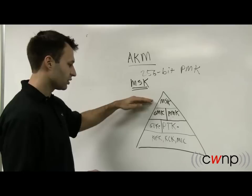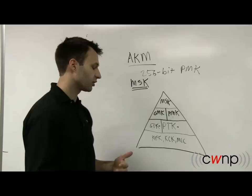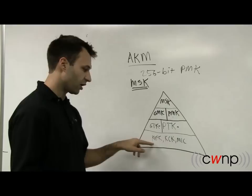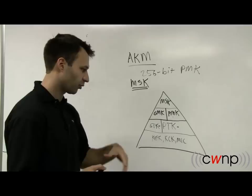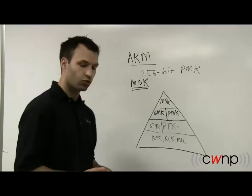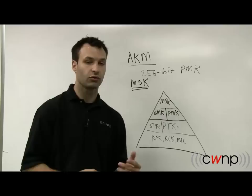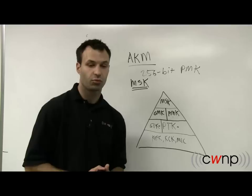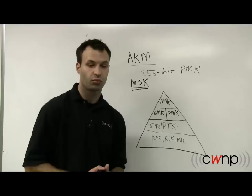In a nutshell, that's authentication and key management. You start with a master session key or a PMK, depending on whether you're using personal or enterprise security. That PMK is turned into a PTK, comprised of other encryption keys, during the four-way handshake. At the same time, the GMK is generated on the access point by a proprietary process and turned into a GTK — group temporal key — usually passed to the client during the four-way handshake or the group key handshake. That's AKM, authentication and key management. My name's Marcus Burton — for more information, check out CWMP.com. Thanks for watching.